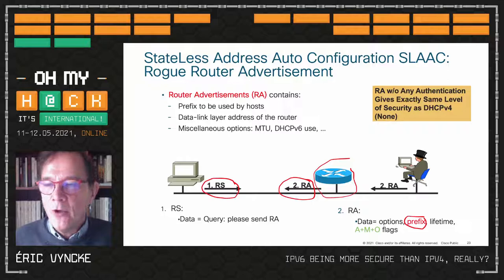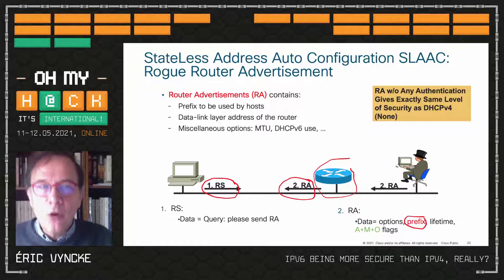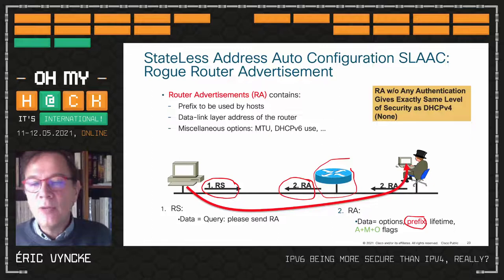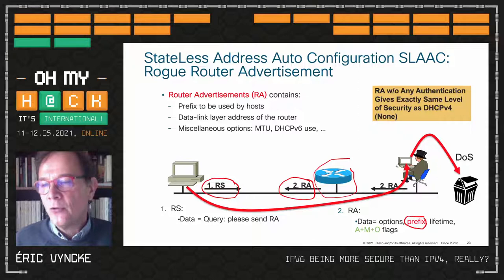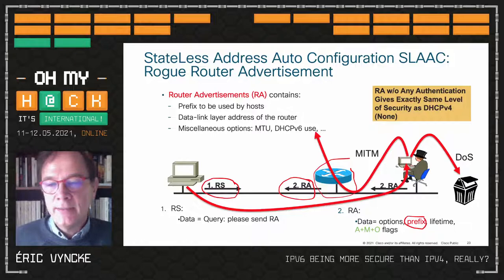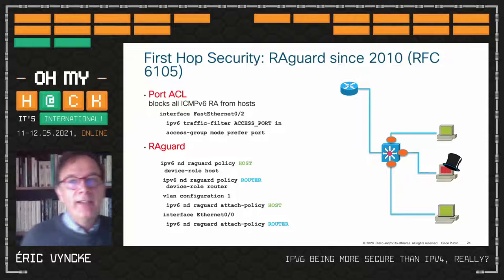But the Router Advertisement was designed in 1998 — no security, same level as ARP, meaning none. A bad guy can send a rogue RA; the PC will believe it's the real router because the RA also includes a priority field. The bad guy sets highest priority, becomes an on-path attacker, and can run a DoS attack or modify traffic.